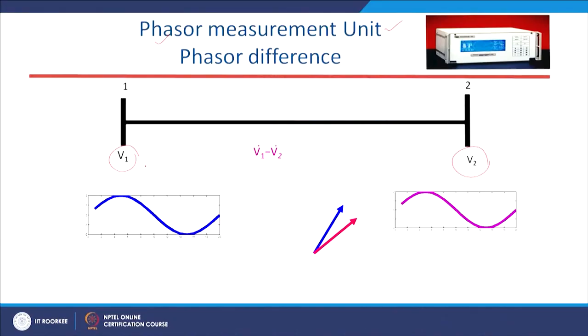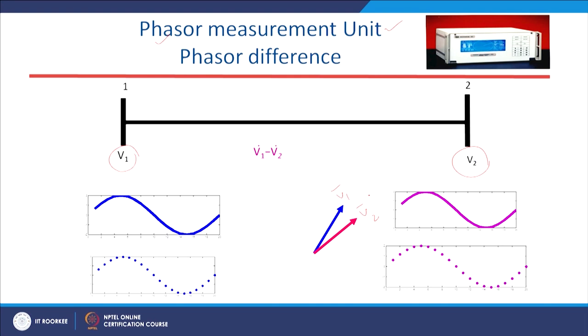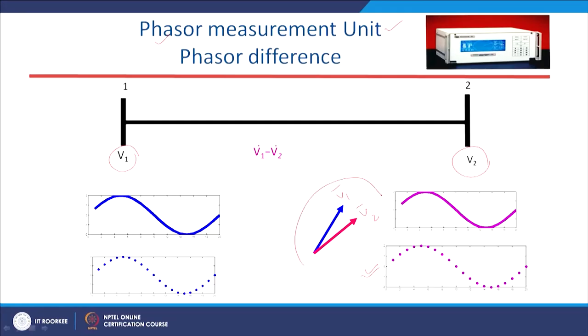The blue phasor represents V1 — the phasor position of bus 1 voltage — and the red one represents V2, the phasor position of bus 2 voltage. With advances in computing and signal processing, we are able to estimate phasors of voltage and current in real time. The DFT (discrete Fourier transform) algorithm runs inside the PMU to estimate voltage and current phasors for further analysis.